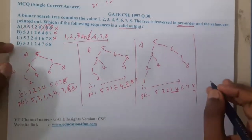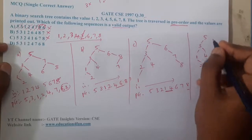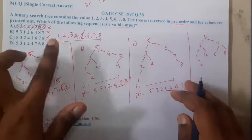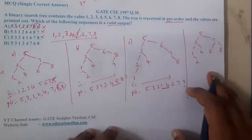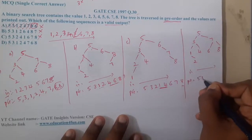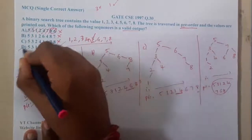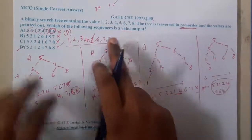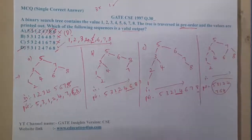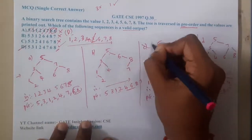Now let us check option D. Starting with 5, then 3, then 1, then 2 here, then 4, then 7, then 6, then 8. In-order will be the same ascending sequence. If you check the pre-order, it gives 5 3 1 2 4 7 6 8 — this is 100% matching with option D. Hence the answer is D. For this given pre-order, the in-order is unique, which is why we can confirm this is the correct pre-order.